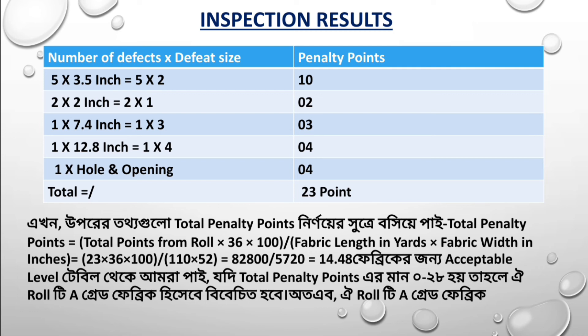The formula is: Total points from roll × 100, divided by fabric length in yards. For example, if the fabric length is 110 yards and we apply 23 penalty points, we calculate: 23 × 100 ÷ 110. This gives us the total penalty points per 100 yards of fabric.